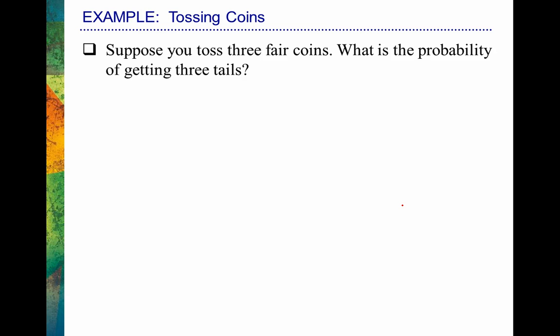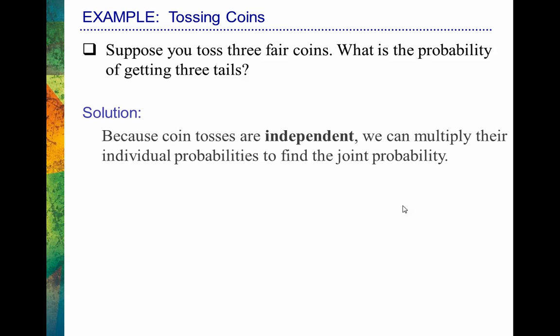Let's go through one more quick example. Suppose you toss three fair coins — what is the probability of getting three tails? Because coin tosses are independent, we can multiply their individual probabilities. The probability of a tail is 0.5, so 0.5 times 0.5 times 0.5 equals 0.125, approximately 0.13. So it's only going to happen about 13% of the time.